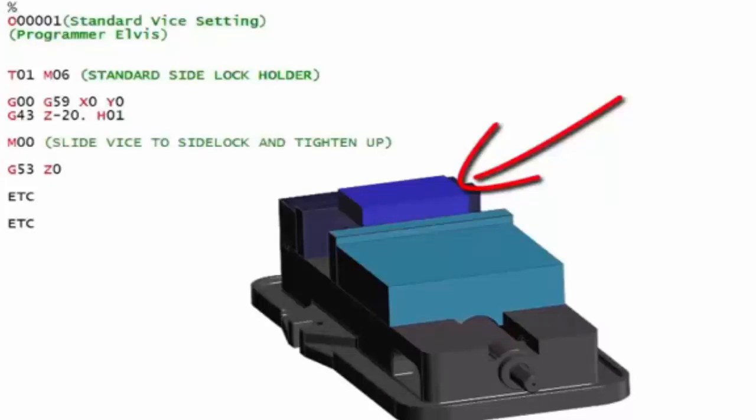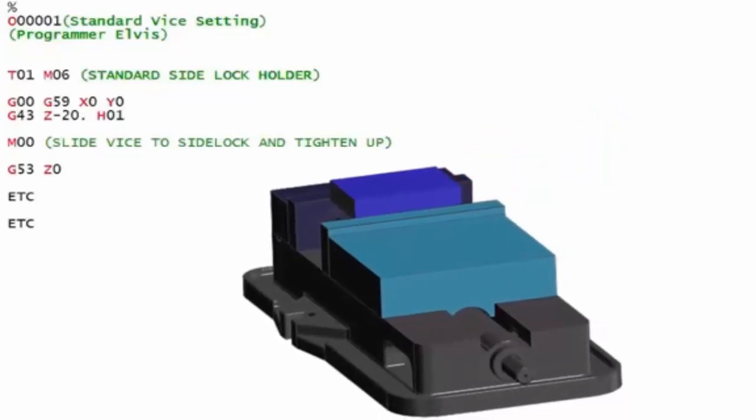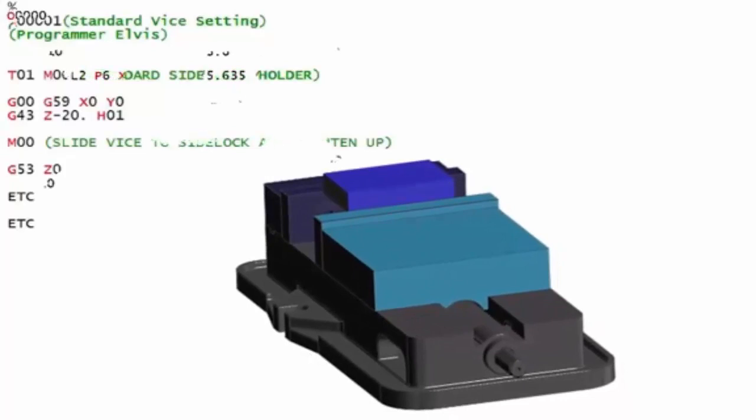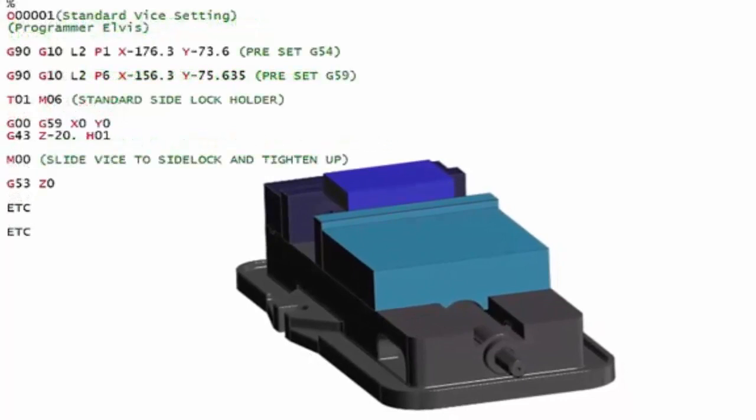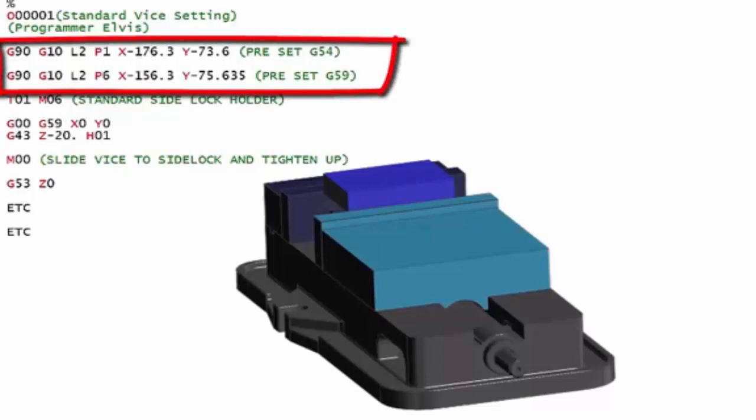This is quite a quick way. The Y is always going to be the same, so in your program you would have a G10 which would set these figures for you. You would have the first one, which if you look at that, G10 L2 P1, that sets G54, so that would be the datum for your part, which is always going to be the same. And then the second one, that G10 L2 P6, which sets G59, and that's going to be the standard position for the vice.